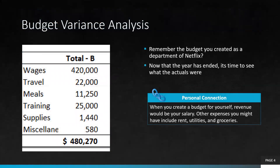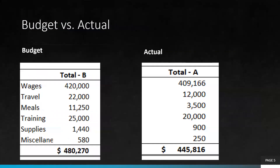So this was the budget that you created with the Netflix department under technology and development. Each department was given a certain amount, and it was $480,270. This was the budget that you sent out. Now that the year has ended, we're going to fast forward and see what the actuals came in at.